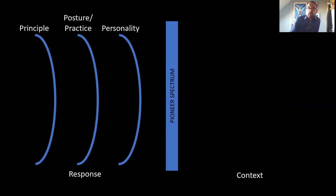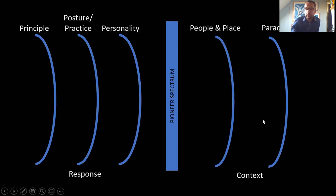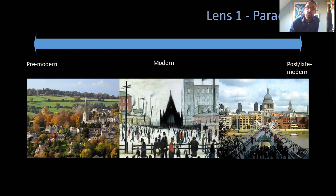All of this needs to happen in context, and there are another couple of important lenses. One is paradigm — by which I mean culture — what is the culture of the place in which you're ministering? The second is people in place — what's the geography here, what kind of people live here, what kind of place is this and what shapes it? As pioneers it's about listening to the culture we're in. There are broadly three main paradigms of culture: pre-modern, modern, and late modern. We live in a world where all three still exist in one form or another.